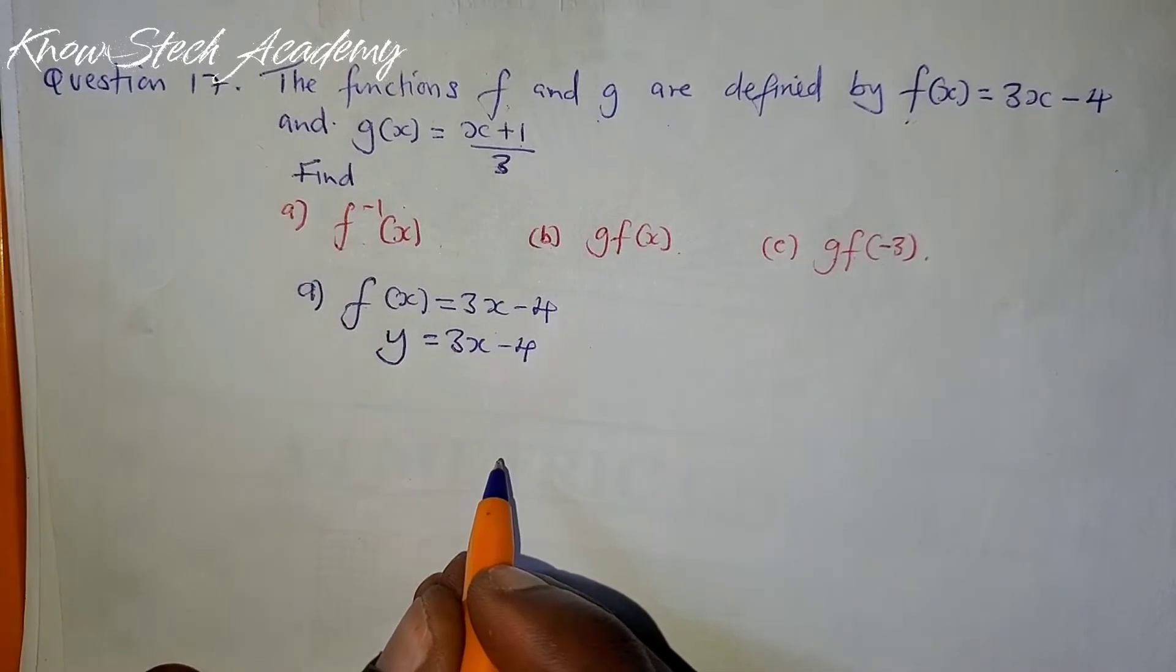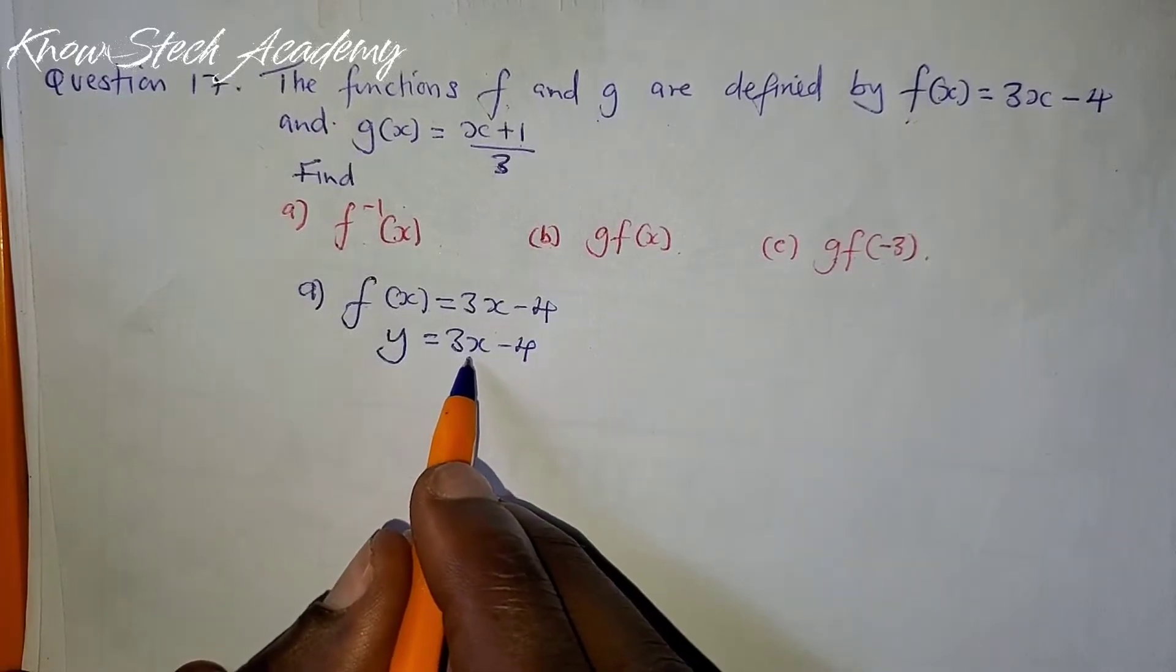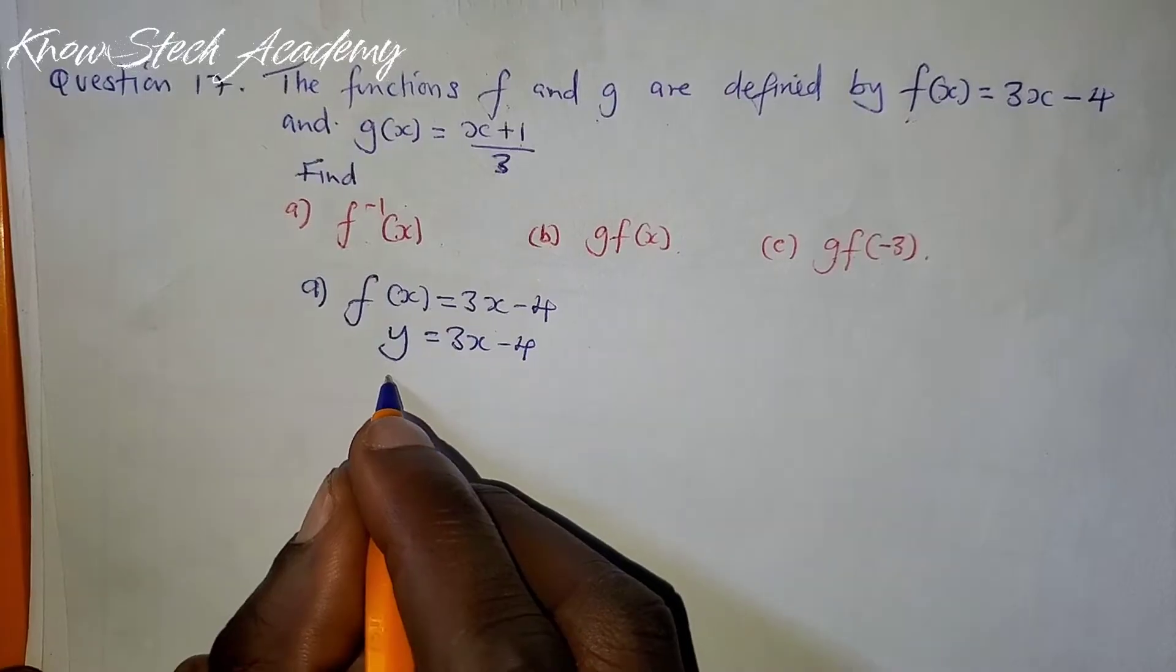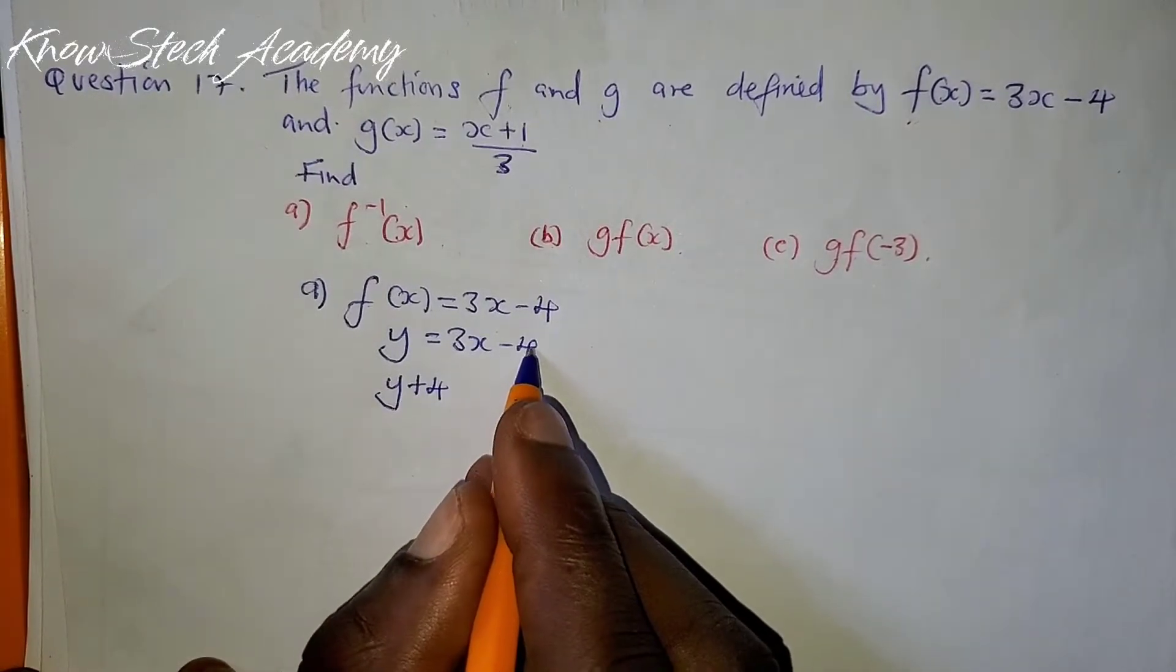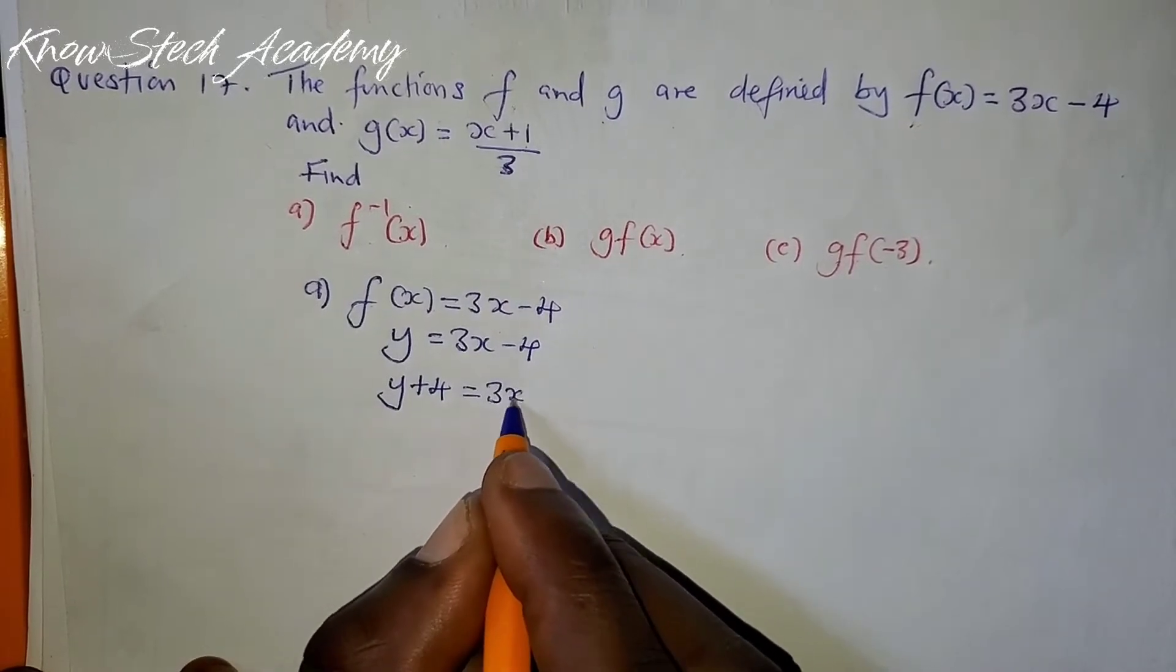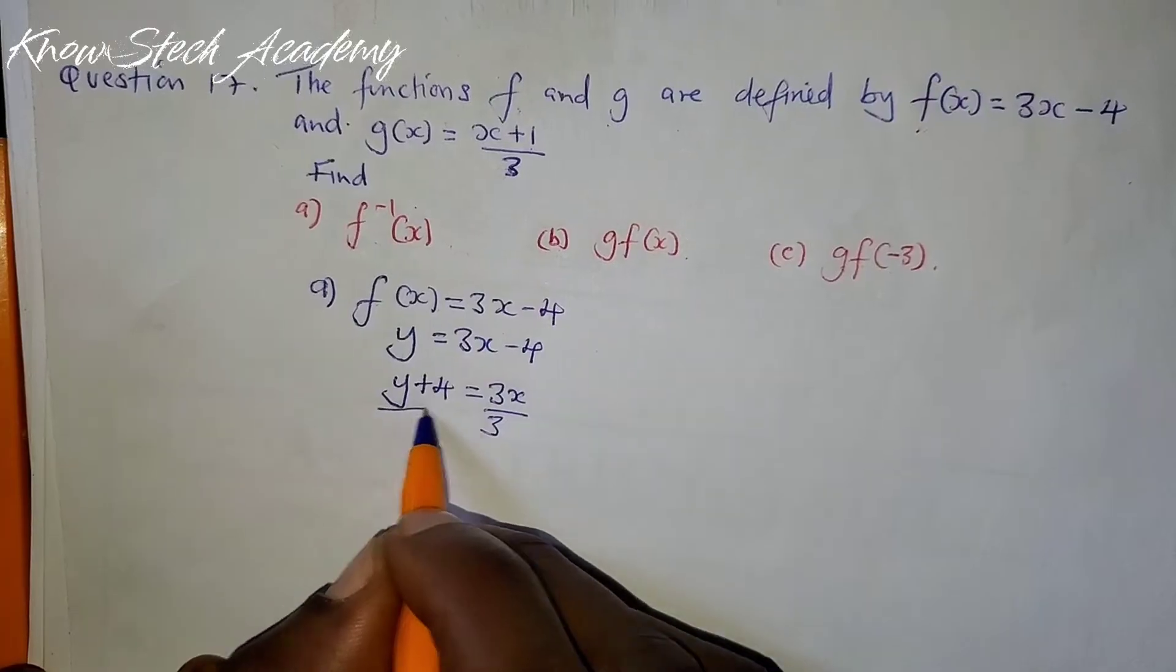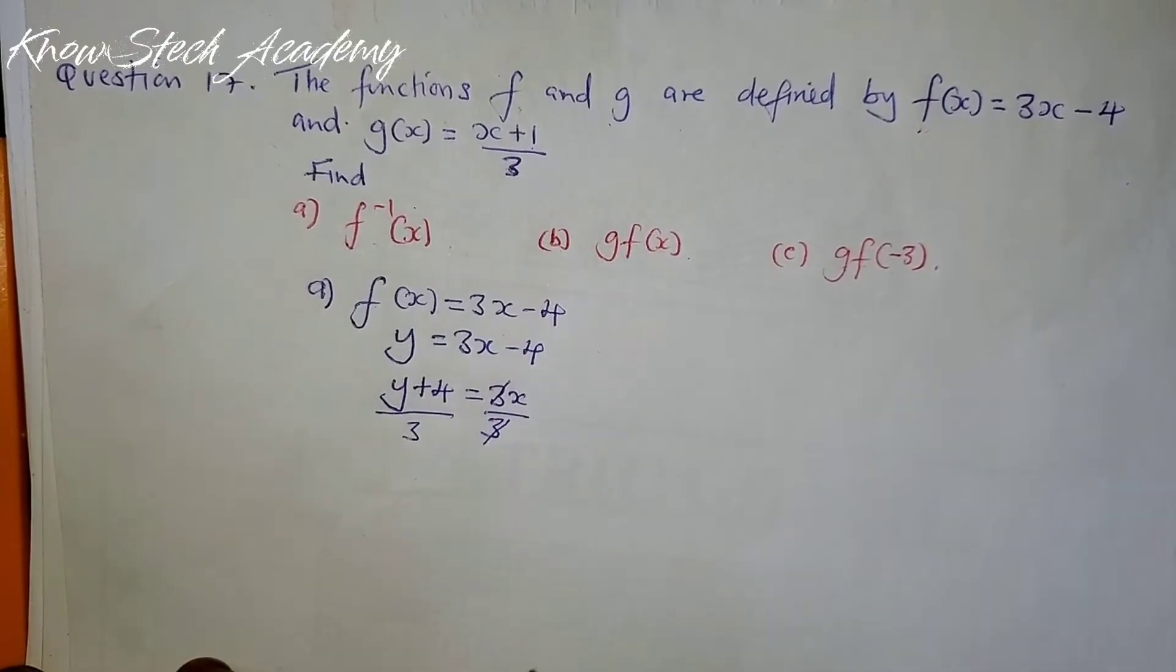After replacing, make x the subject of the formula. Making x the subject, the negative 4 crosses the equals sign, and it will be y + 4 because this negative when it crosses becomes positive, leaving 3x on the right-hand side. Now it's not yet independent, so we divide by 3 to make x the subject of the formula.